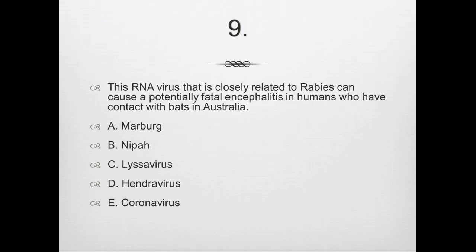Question number 9: This RNA virus closely related to rabies can cause a potentially fatal encephalitis in humans who have contact with bats in Australia. Is it A, Marburg; B, Nipah virus; C, Lyssavirus; D, Hendra virus; or E, Coronavirus?